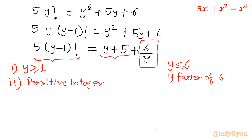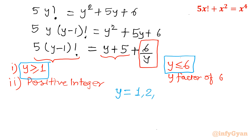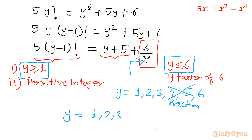Combining both conditions (y ≥ 1 and y ≤ 6), y can be 1, 2, 3, 4, 5, or 6. However, y = 4 and y = 5 are ruled out because 6/4 and 6/5 are not integers, giving a fractional right hand side. So the candidate values to check are y = 1, 2, 3, and 6.